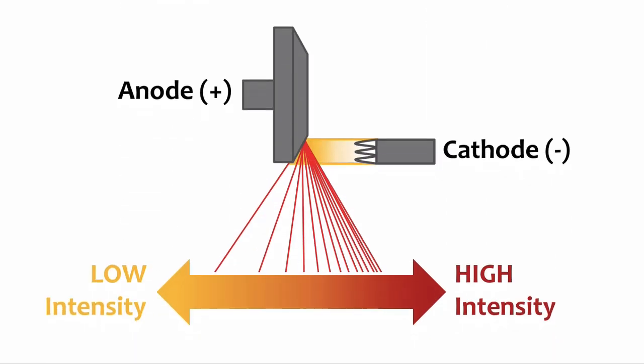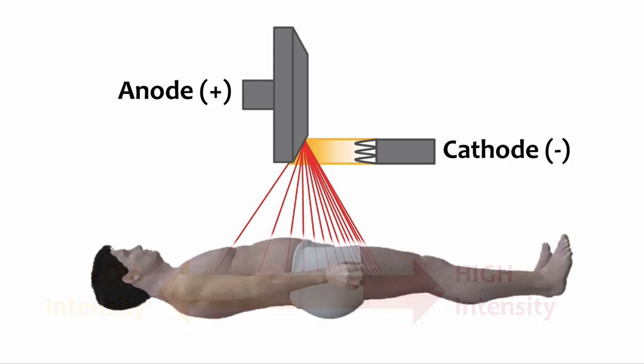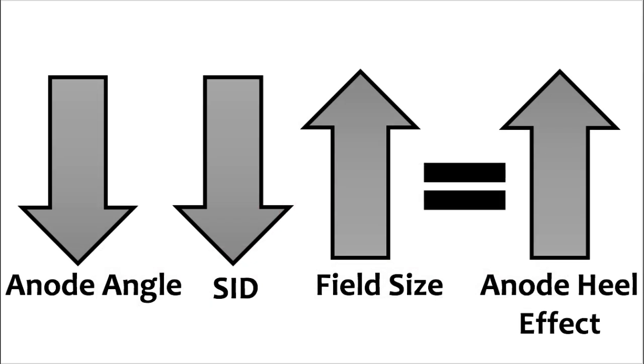In summary, the anode heel effect is the change in beam intensity across the length of the x-ray field. Specifically, the anode side has fewer photons and the cathode side has more photons — the anode side is weaker and the cathode side is stronger. Remember that the heel effect can be used to our advantage by placing the thinnest portion of the patient under the anode side and the thickest portion under the cathode side. Finally, three changes can increase the anode heel effect: decreased anode angle, decreased SID, and increased field size.